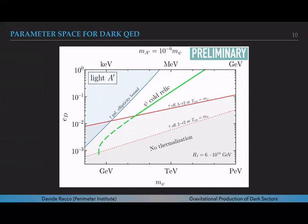The parameter space that leads to the right abundance is also safe from constraints on long-range interactions for dark matter.